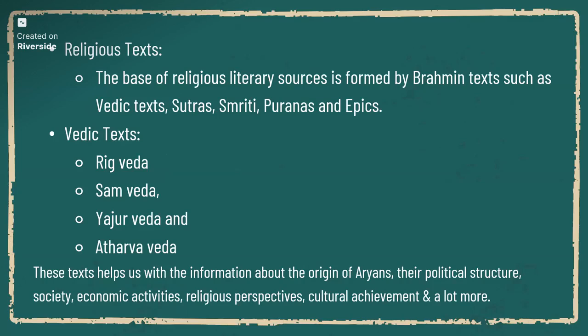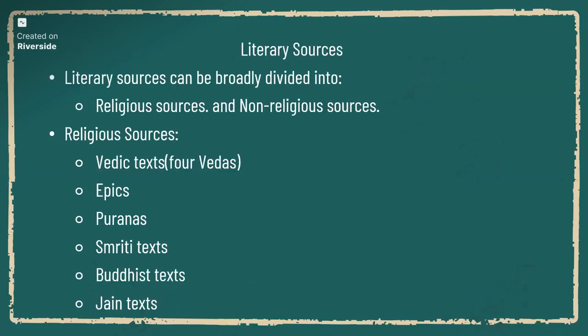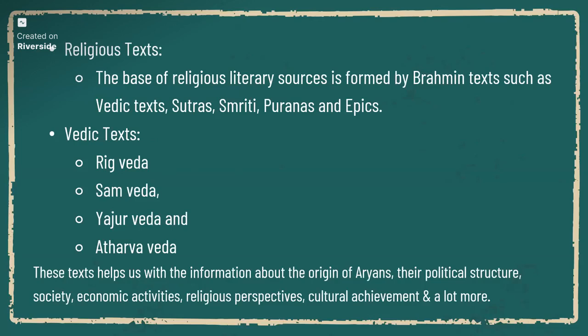There are four Vedas: Rig, Sama, Yajur, and Atharva. The chronological order is Rig, Sama, Yajur, Atharva — which is important for exam questions. The Rig Veda is known as the early Vedic text; it contains hymns and is the oldest Vedic text. The other three are later Vedic texts. These texts help us understand the political structure, society, and economic activities.